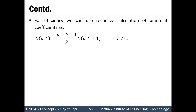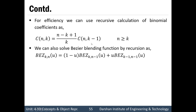For efficiency, we can use a recursive calculation of the binomial coefficient, where C(n,k) equals (n minus k plus 1) divided by k times C(n, k-1), for n greater than or equal to k. We can also solve the Bezier blending function BEZ(k,n)(u) by recursion as BEZ(k,n)(u) equals (1 minus u) times BEZ(k, n-1)(u) plus u times BEZ(k-1, n-1)(u).